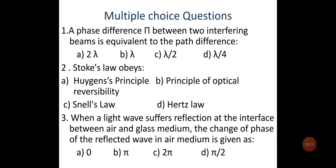The first question is multiple choice. A phase difference π between two interfering beams is equivalent to the path difference of what?